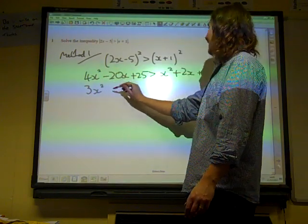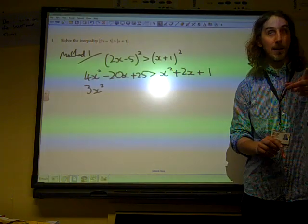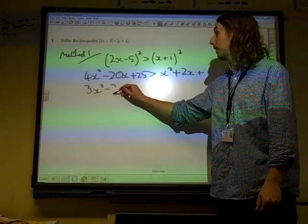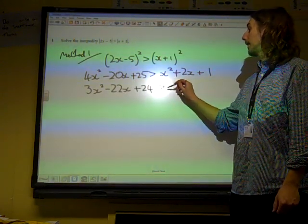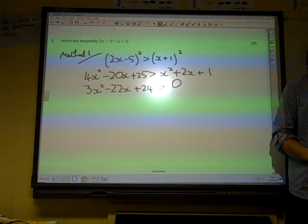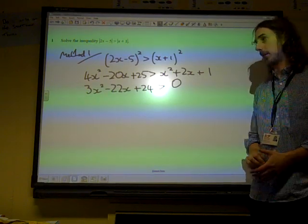Now this is, quite a few people made this mistake here. Minus 20 take away 2 will be minus 22x and plus 24. It's slightly alarming how many people ended up with minus 18 in there.